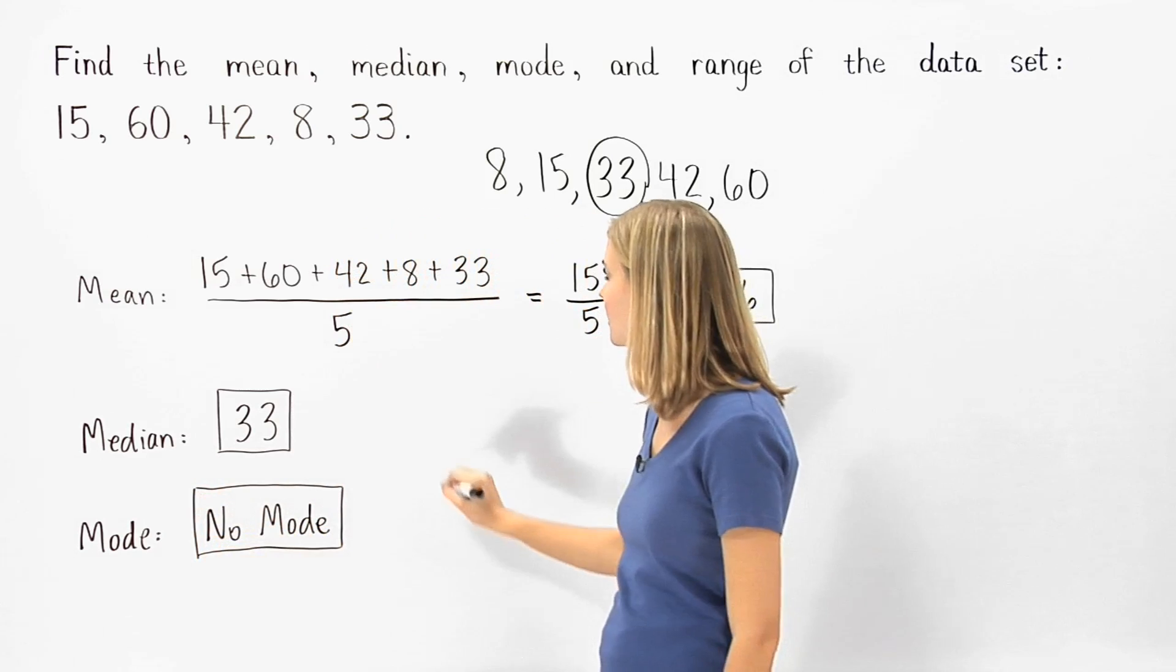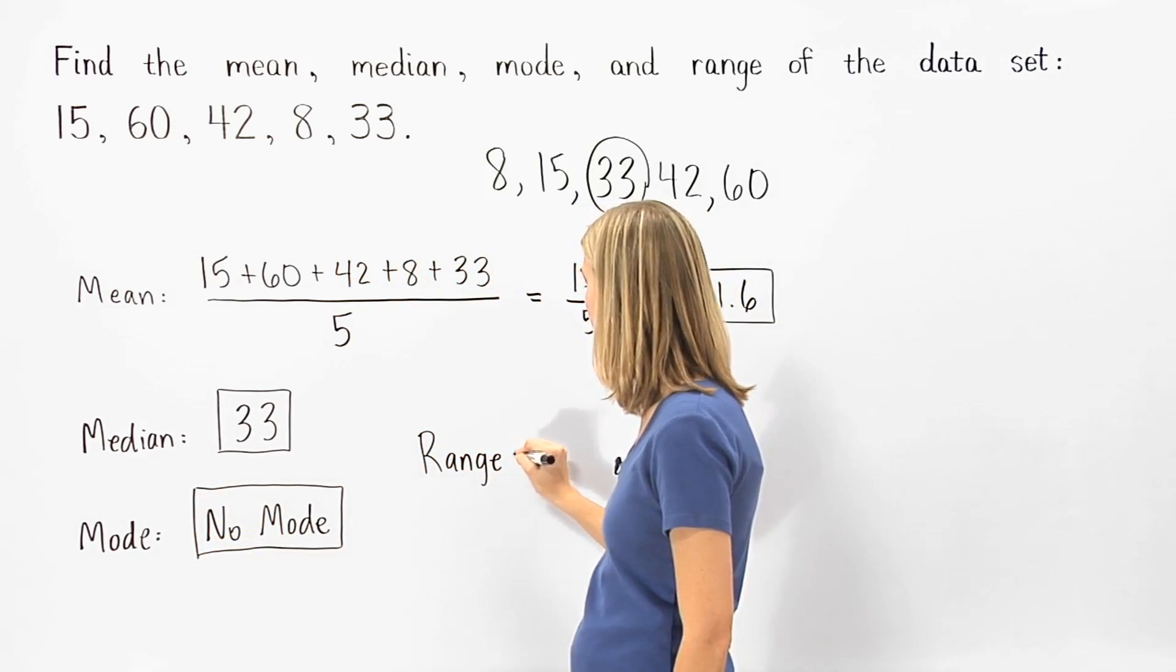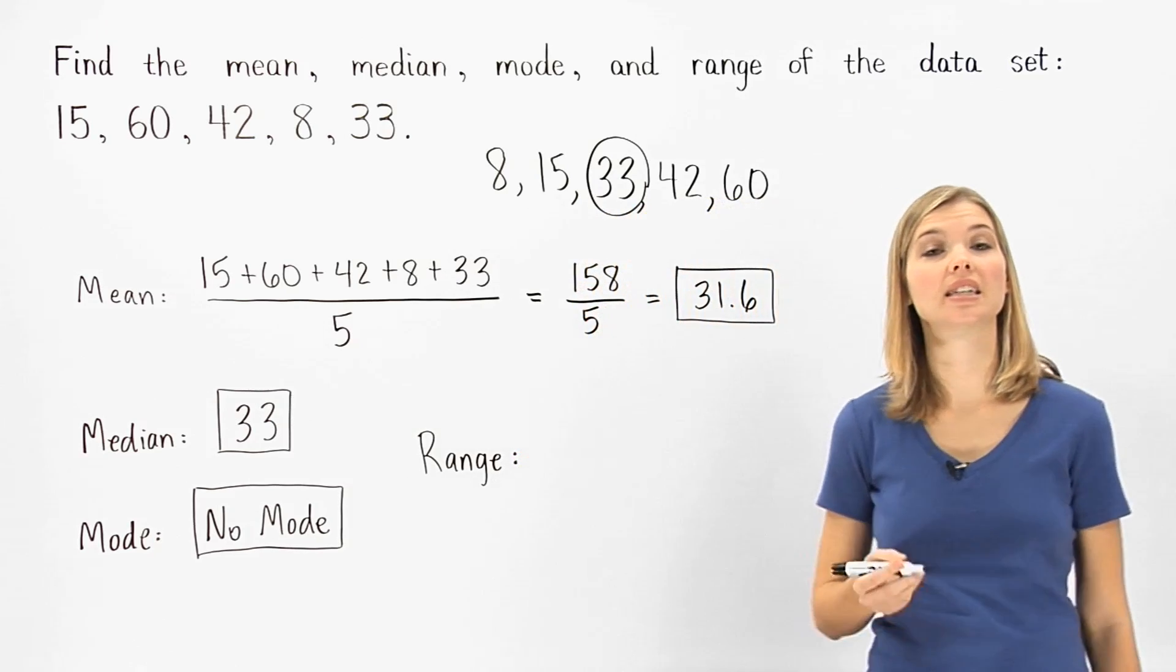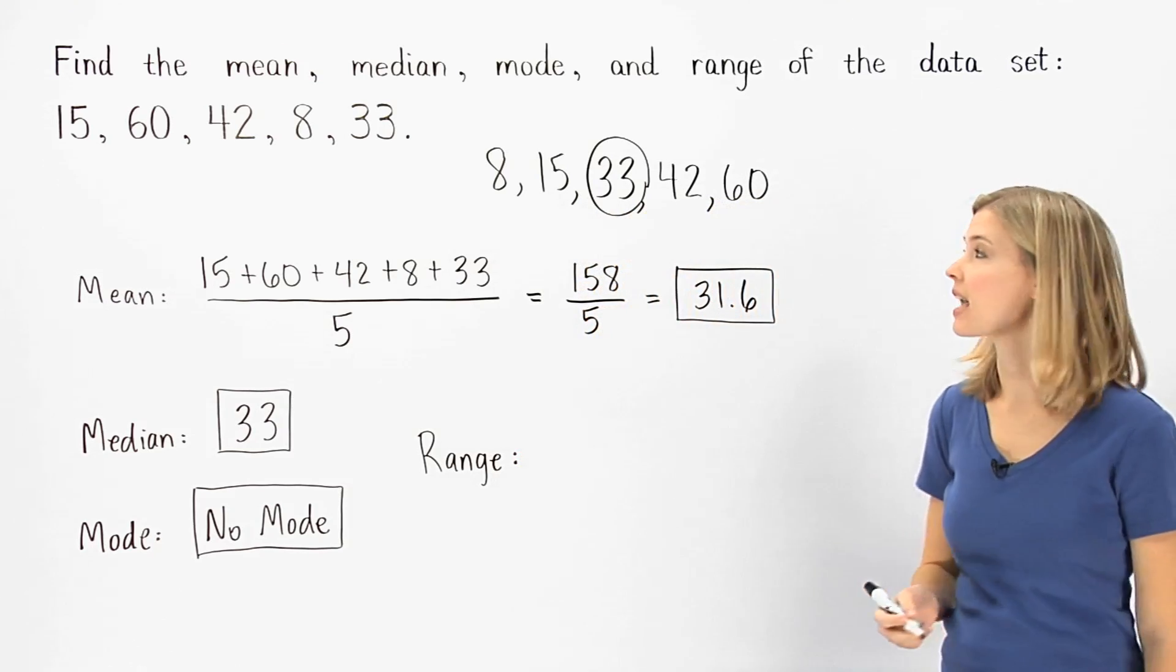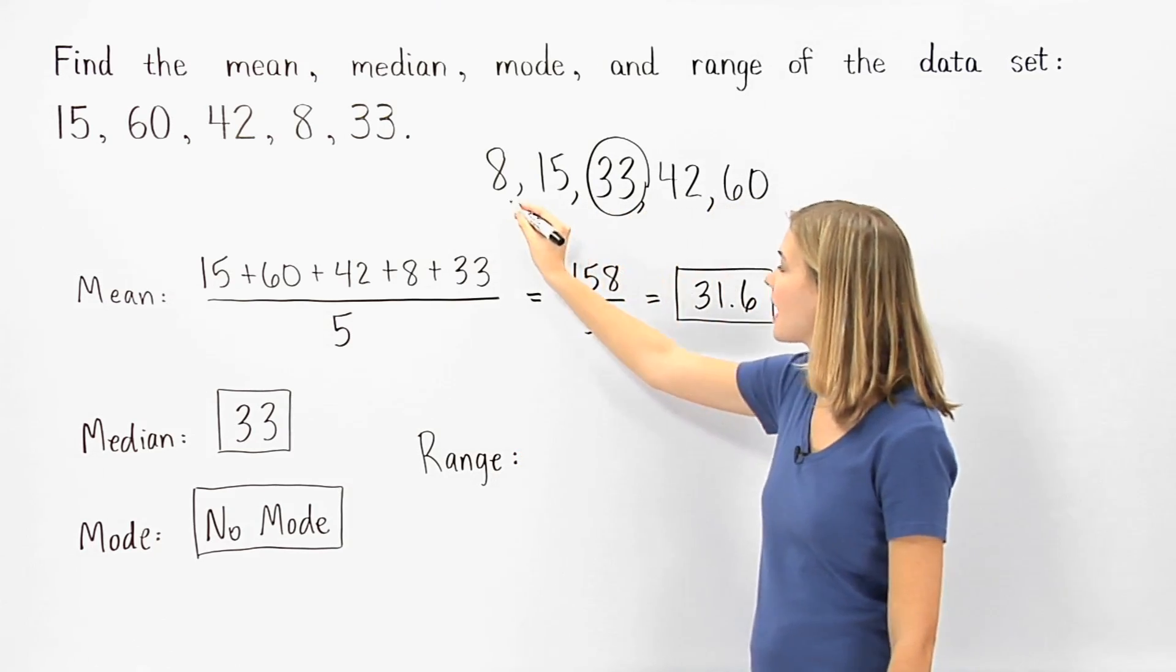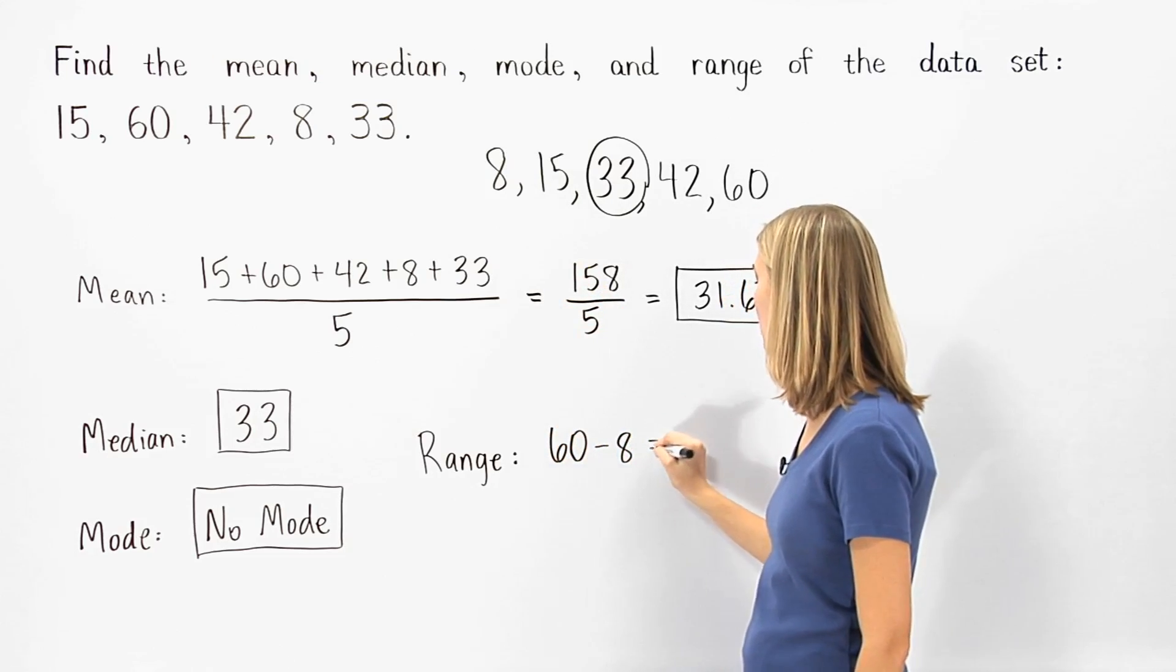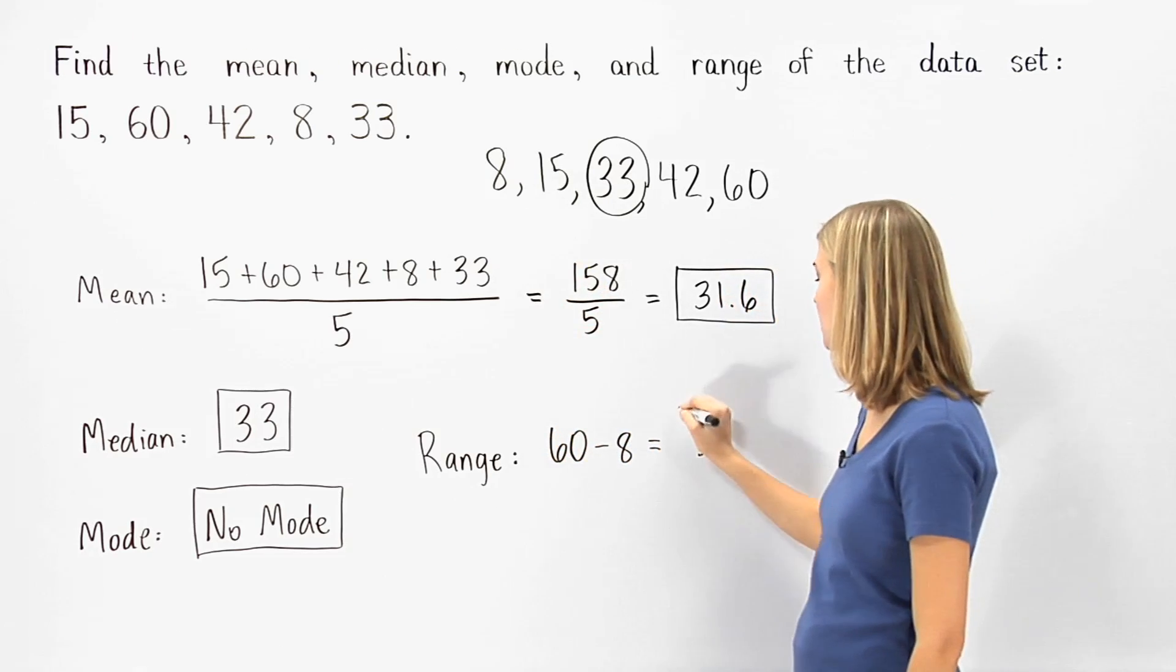Finally, we're asked to find the range of the data set. Remember that the range of a data set is the difference between the largest and smallest numbers, which in this case is 60 minus 8, or 52. So the range of the given data set is 52.